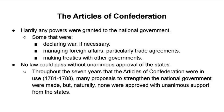One of the main reasons that the Articles were so dysfunctional is that there were hardly any powers granted to the government. They could declare war if necessary, manage foreign affairs and trade agreements, and make treaties with other governments. But there was very little they could do within the United States itself. Many proposals were made in the seven-year window to make the national government a lot stronger, but none were approved because unanimous support from the states was required.